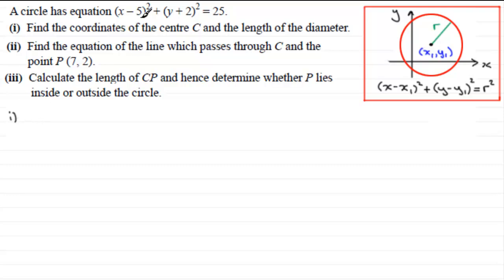The centre is going to be at (5, -2). When you compare this to the particular format we've got here, you should be able to see that x₁ is 5 and y₁ is -2. So the centre C has coordinates (5, -2).